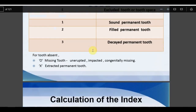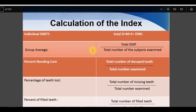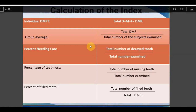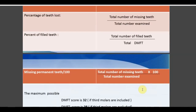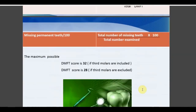DMFT calculation options: Individual DMFT = D + M + F for one person. Group average DMFT = total DMF of all subjects divided by total number of subjects. Persons needing care = total Decayed divided by total number examined. Percentage of teeth lost = number of Missing teeth divided by total number. Percentage of filled teeth = total Filled divided by total DMF. Maximum possible score is 28 in the original version or 32 in the WHO modified version.